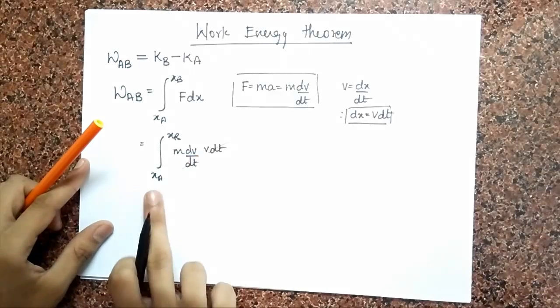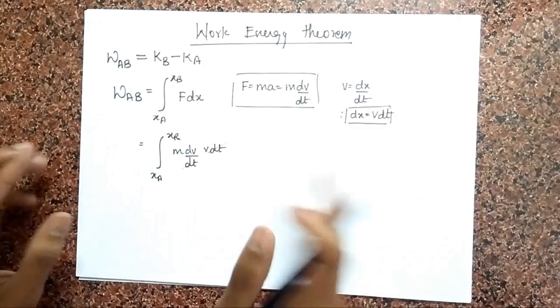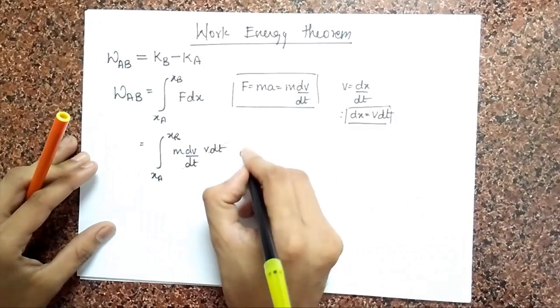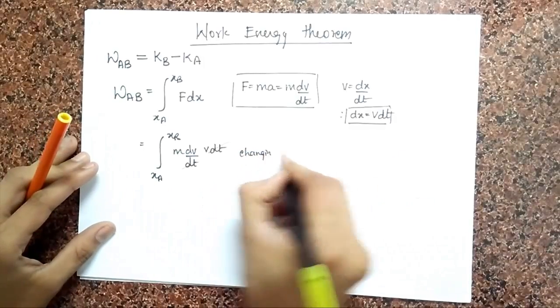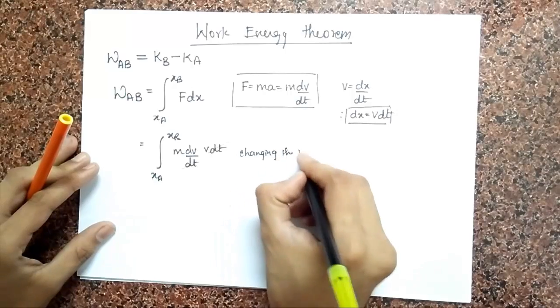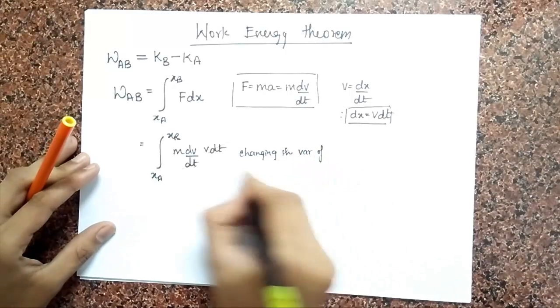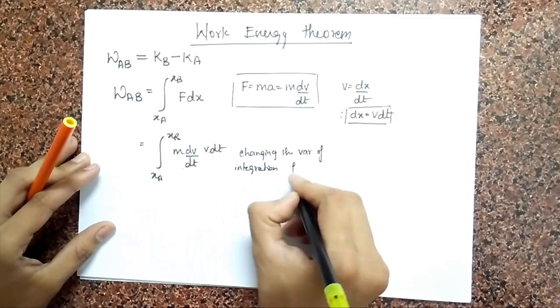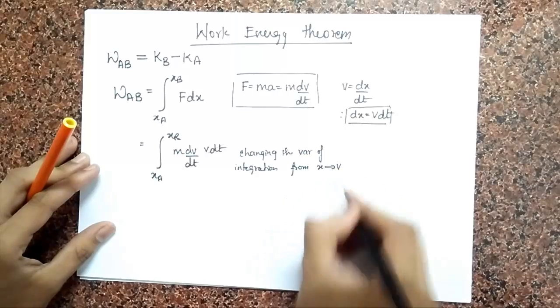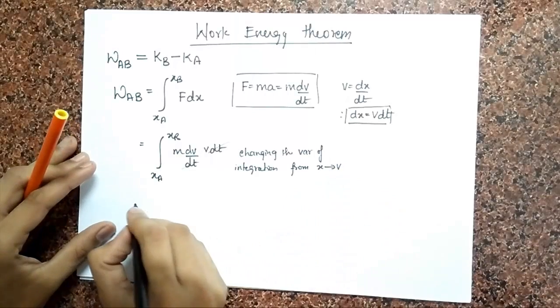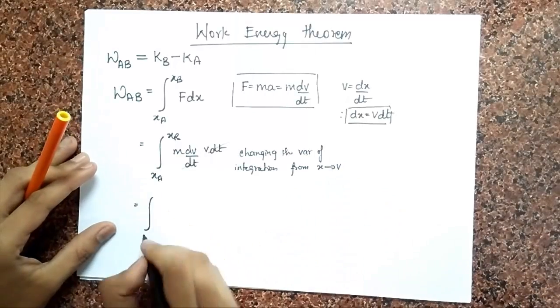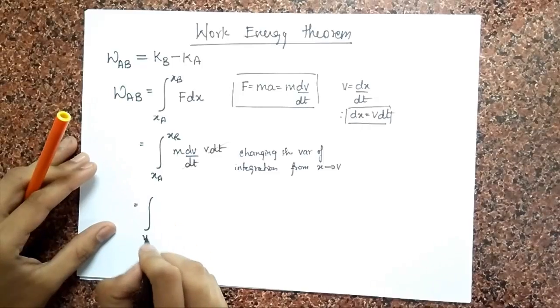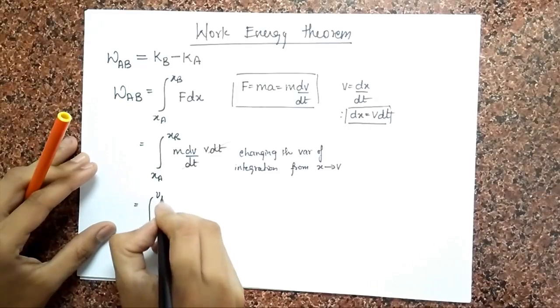Therefore, I have to change my limits appropriately. So I am just going to write it down what I did. I am changing the variable of integration from X to V. So this becomes now velocity at A to velocity at B.